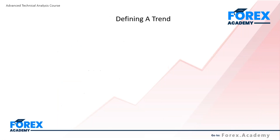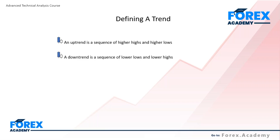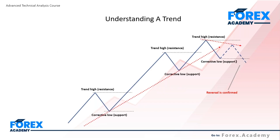Those are your three phases of a trend. What we now move on to is defining a trend. There is a very simple definition for both an uptrend and a downtrend. An uptrend is simply defined as a sequence of higher highs and higher lows. A downtrend is simply a sequence of lower lows and lower highs. That is your standard definition of a trend — simply apply this in terms of how price action is behaving when analyzing a trend.